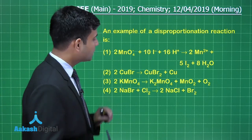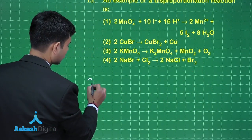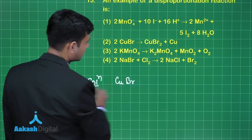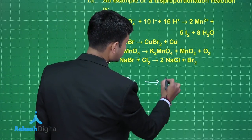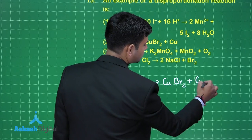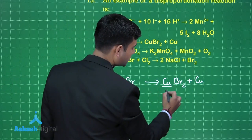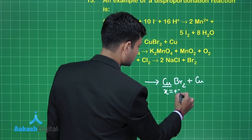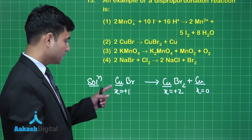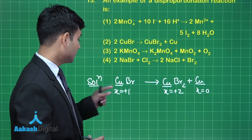If I consider the second reaction, we have CuBr converting to CuBr₂ and Cu. The oxidation state in CuBr is +1; in CuBr₂ the oxidation state of copper is +2, and in Cu the oxidation state is 0. So this copper is being oxidized as well as reduced.